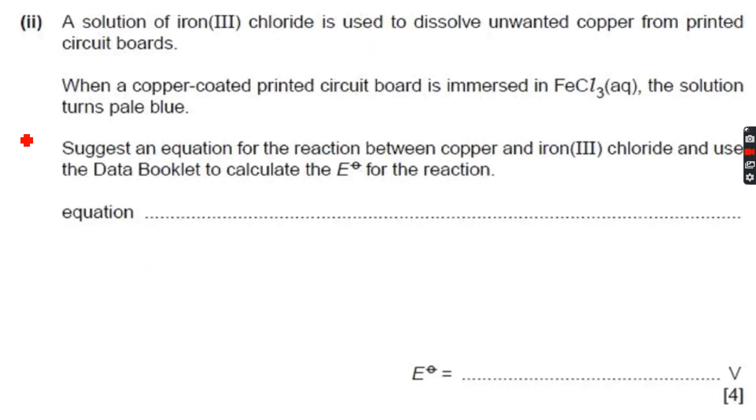A solution of iron(III) chloride is used to dissolve unwanted copper from printed circuit boards. Iron(III) chloride is FeCl₃, which means it contains the Fe³⁺ ion. When a copper-coated printed circuit board is immersed in FeCl₃ aqueous, the solution turns pale blue because Cu²⁺ ions are being formed.